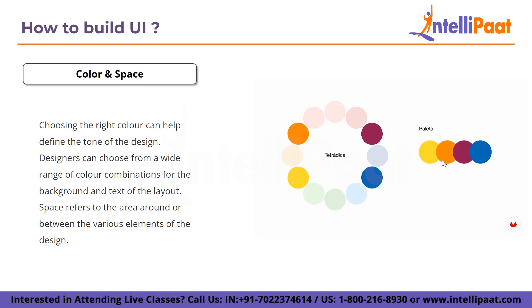The next component is color and space. Choosing the right color can help define the tone of the design. Designers can choose from a wide range of color combinations for the background and text. Space refers to the area around and between the various elements of the design. Choosing the right color is very important to define the tone of your user interface.